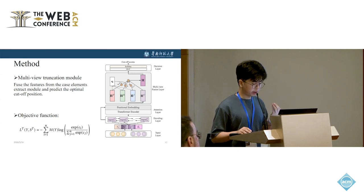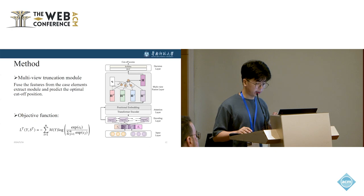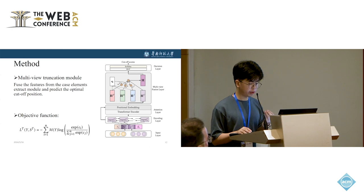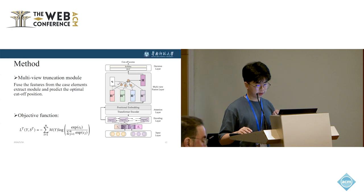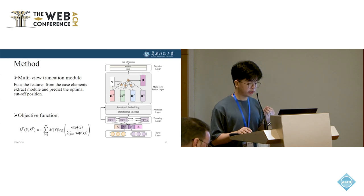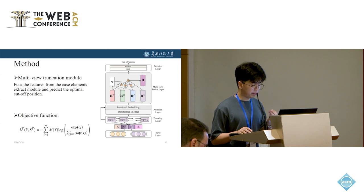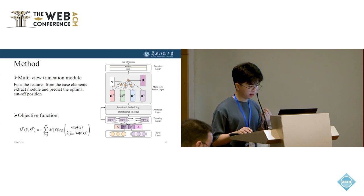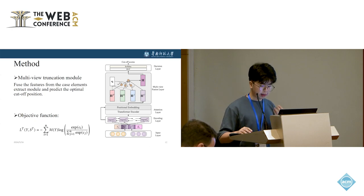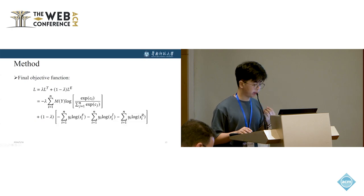Besides, extra position embedding is added. In the multi-view fusion layer, we fuse the hidden states from the case elements extraction model. Since each view feature offers different information that impacts the truncation decision, we propose a multi-view fusion layer. We use the attention mechanism to select the most informative feature and get a more comprehensive representation for better truncation. And lastly, we can get the probability distribution of the cut position from the decision layer.